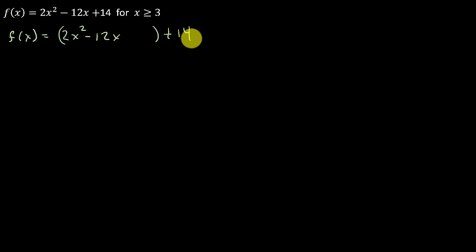Okay, so you can probably see what I'm fixing to do. I'm going to complete the square. But remember, you can't complete the square if you have a number in front of x squared other than 1. Remember, you've got to have a 1 in front of your x squared. So what we're going to do here is we're going to factor out a 2.